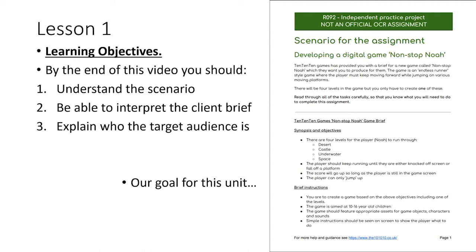Below that is the game brief — a fairly standard style document you would receive if you were creating a first draft of a game. We've got the synopsis and objectives: there are four levels for the player, Noah, to run through, with a theme for each of those four levels. The player will keep running until they're either knocked off screen or they fall off a platform. The score will go up so long as they're still in the screen, and the player can only jump — there are no other controls.